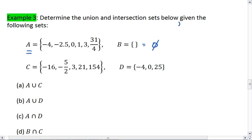B is the empty set, it has no elements. C is the set negative 16, negative 5 halves, 3, 21, 154. And D is the set of negative 4, 0, and 25.